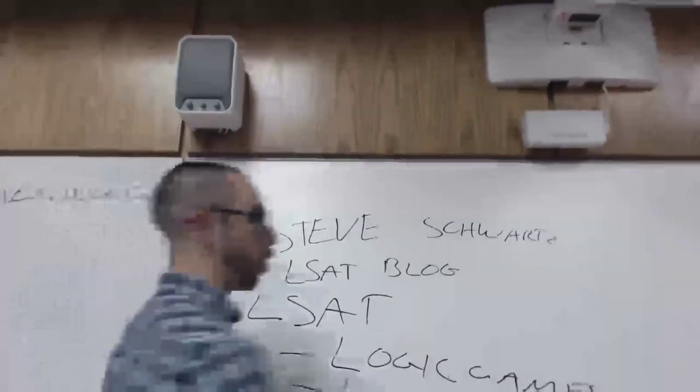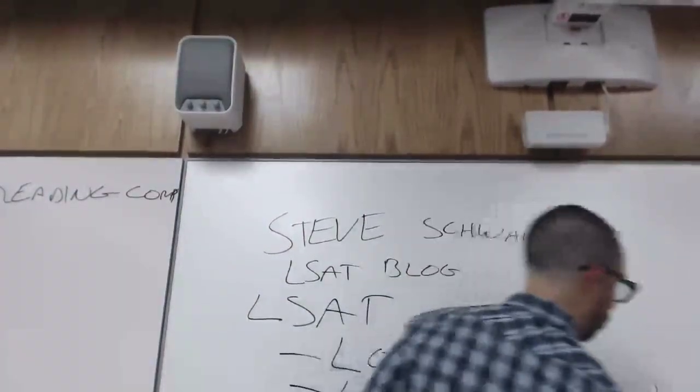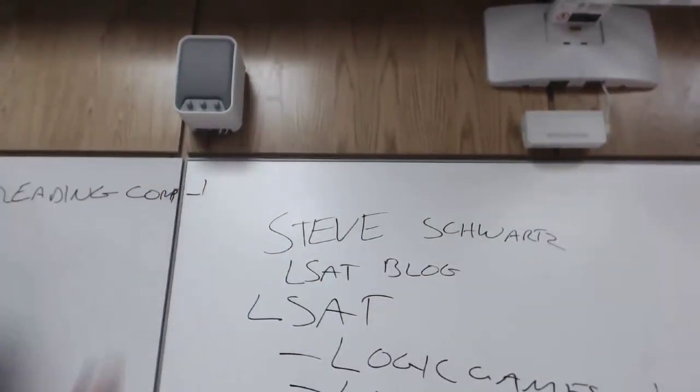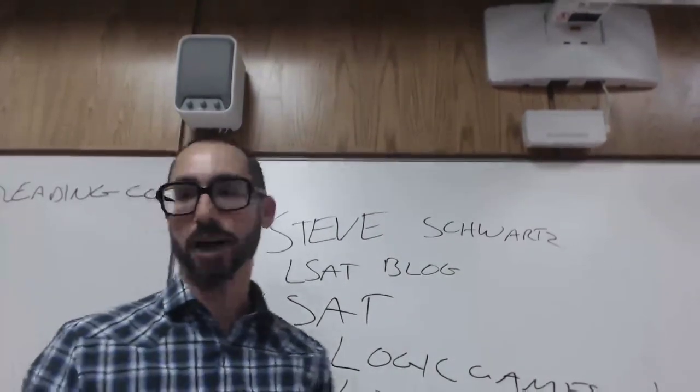Now, the LSAT has one section of games, two sections of logical reasoning, and one section of reading comp. So there's four sections altogether, just three different types of sections.